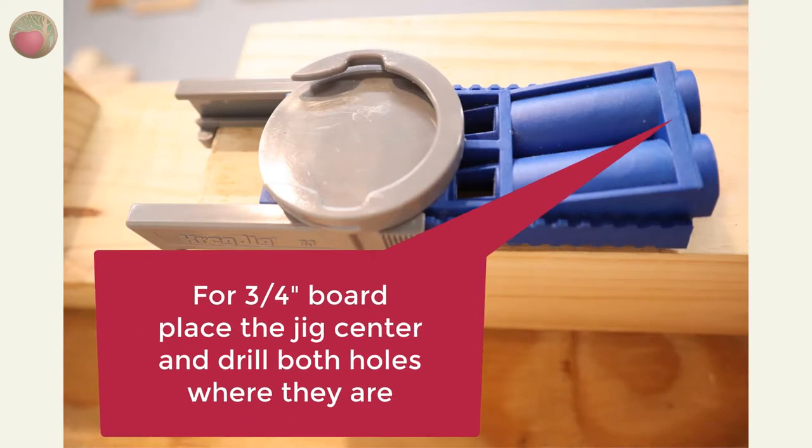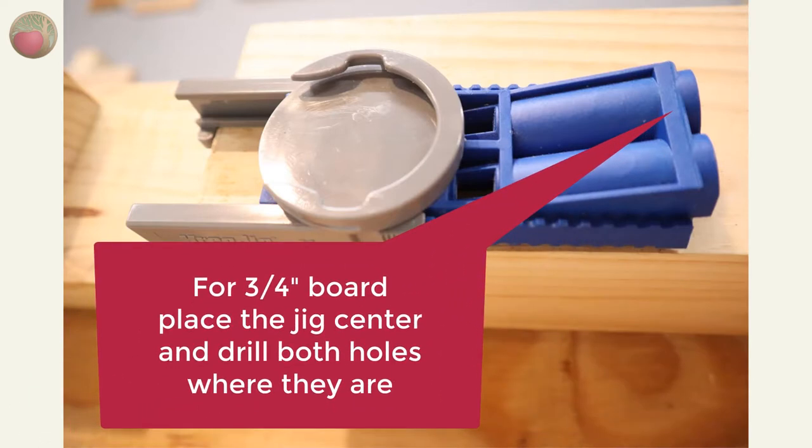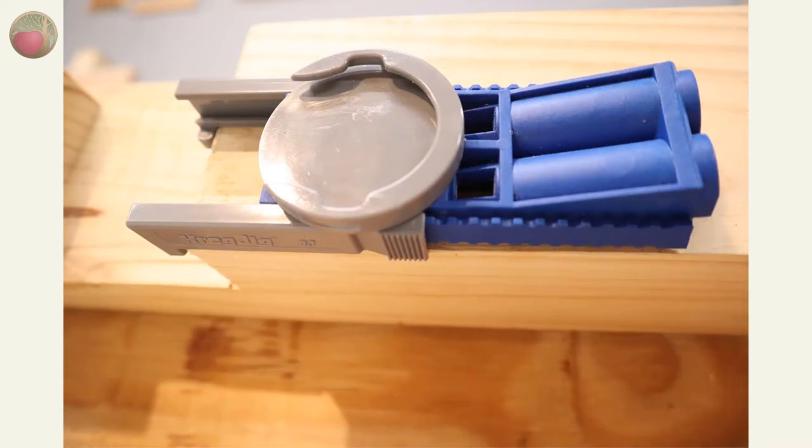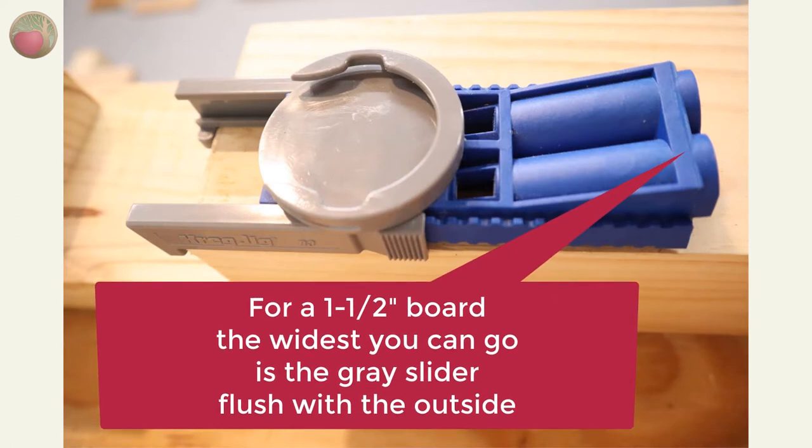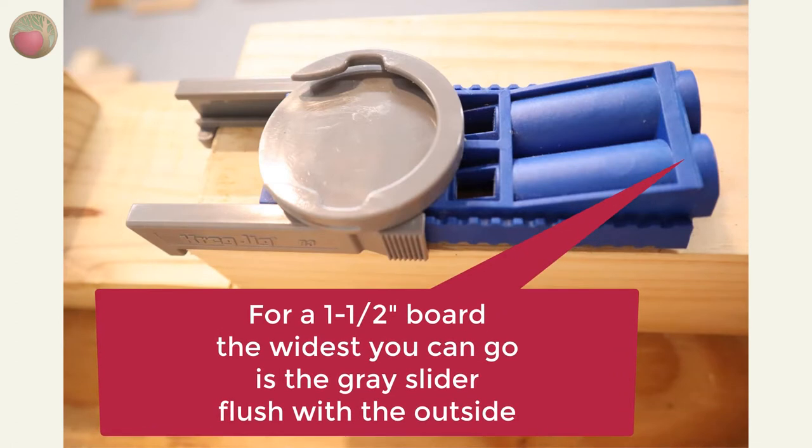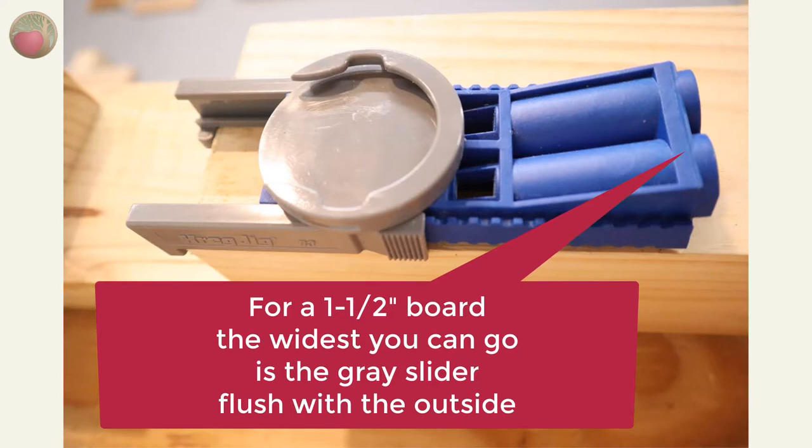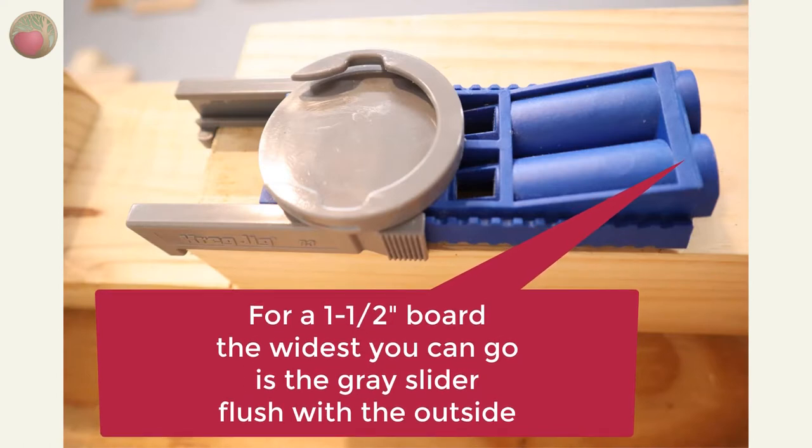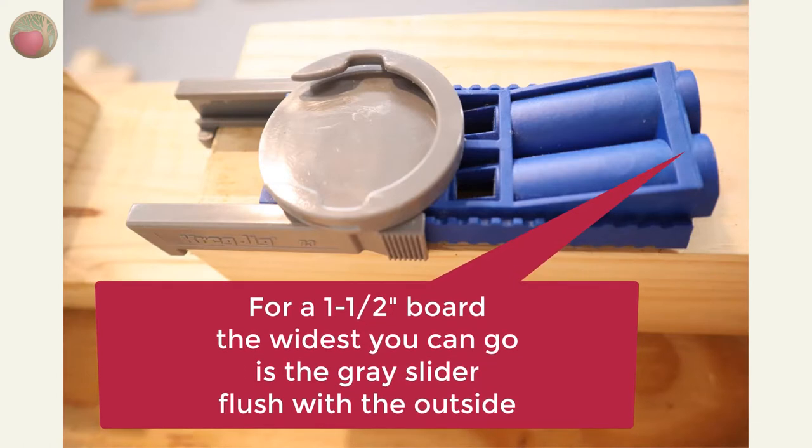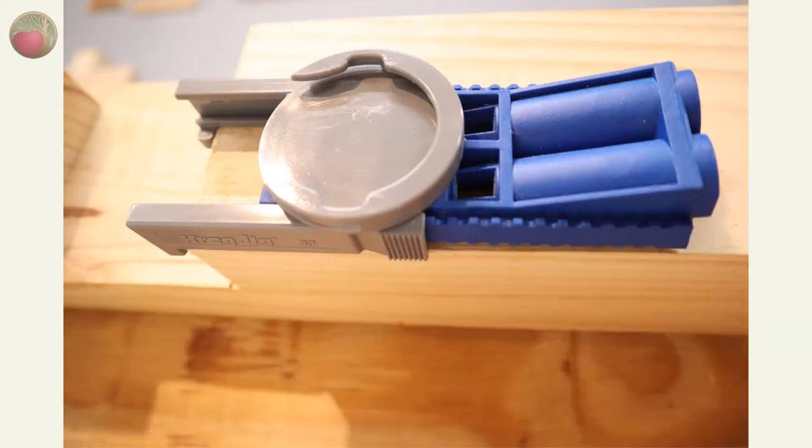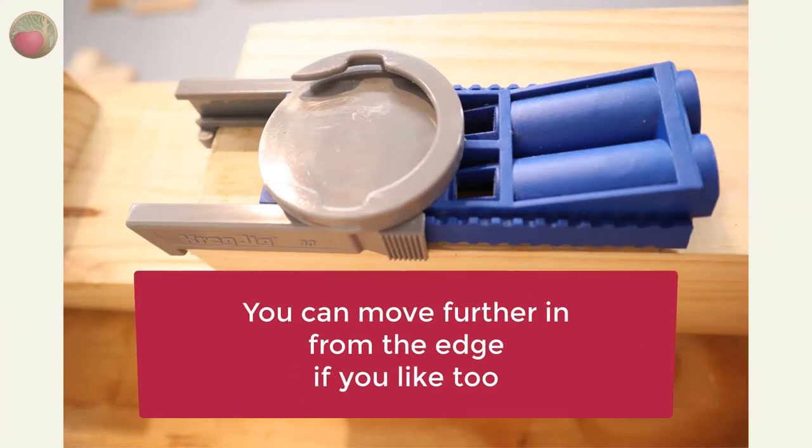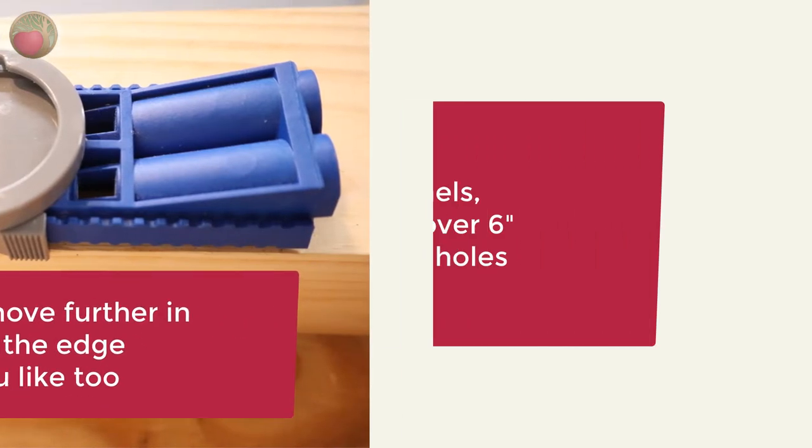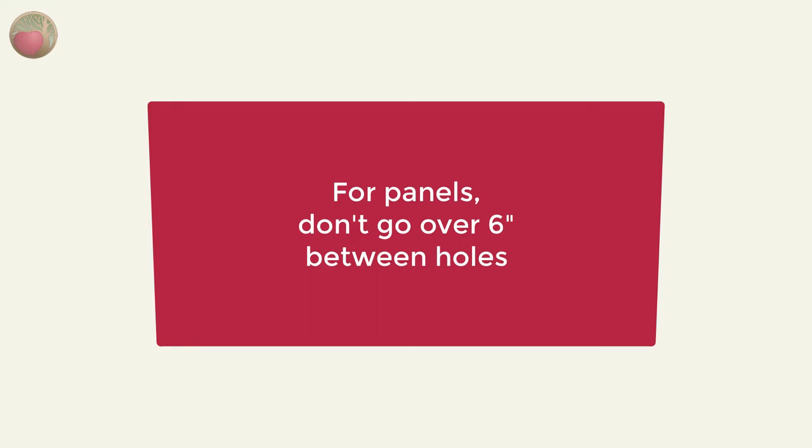For a one inch board which is actually three quarters of an inch place the jig in the dead center and drill both holes. For a two inch board that's actually one and a half inches the widest you can go would be to place the gray slider flush on one side as shown here and use the drill hole on that same side then repeat for the other side. Of course you can always move more toward the center for each hole if you like. For panels you don't want to go more than six inches between holes.